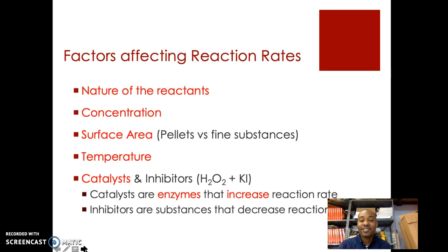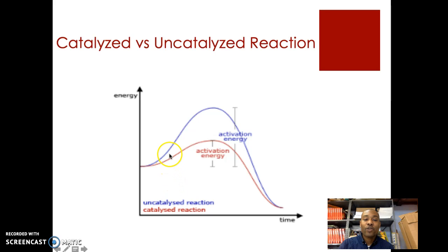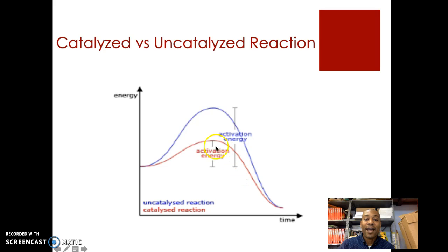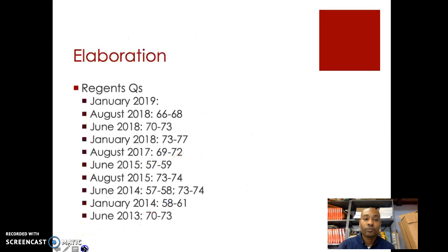Catalysts are substances that increase the reaction rate by lowering the activation energy. This graph shows that an uncatalyzed reaction, shown in blue, has a higher activation energy — a higher hump. Substances with a catalyst have a lower activation energy, so catalysts make the reaction go faster by lowering that energy barrier. Now we're going to take a look at some problems in this area.